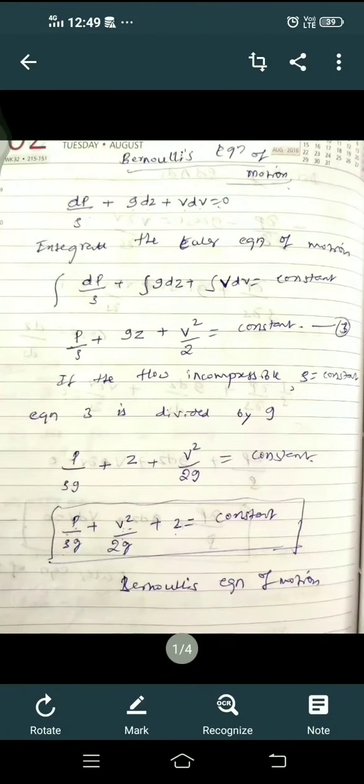Okay, in this video we'll discuss the derivation of Bernoulli's equation. To derive Bernoulli's equation, we want the integration of the final equation of Euler's. The final equation of Euler's is dp/ρ + g dz + v dv = 0.